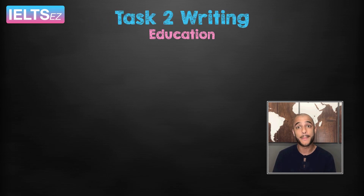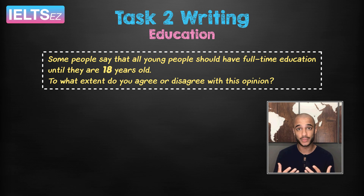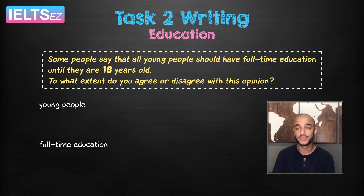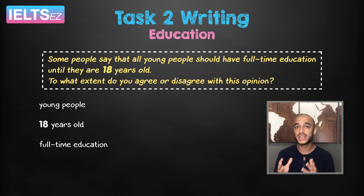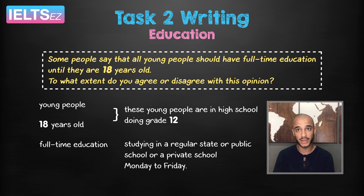Finally, let's have a look at this Task 2 writing question about education: some people say that all young people should have full-time education until they are 18 years old — to what extent do you agree or disagree with this opinion? To answer this well, pay attention to the key words: young people, full-time education, 18 years old. We need to focus on young people under 18 in high school doing grade 12. Full-time education means studying in a regular state, public, or private school Monday to Friday. Your understanding of the vocabulary in any writing question is essential to answering it well and staying on topic.